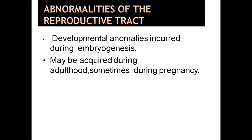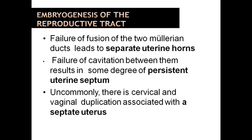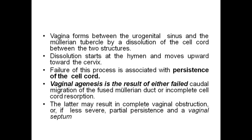Abnormalities of the uterine tract: developmental abnormalities incurred during embryogenesis may be acquired during adulthood, sometimes during pregnancy. Failure of fusion of the two Mullerian ducts leads to separate uterine forms. Failure of cavitation between them preserves some degree of persistent uterine septum. Uncommonly, there is cervical and vaginal duplication associated with the septate uterus. The vagina forms between the urogenital sinus and the Mullerian tubercle by dissolution of a cell cord between the two structures. Dissolution starts at the hymen and moves upward toward the cervix. Failure of this process is associated with persistence of the cell cord.